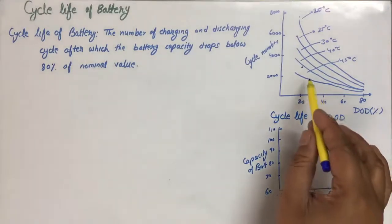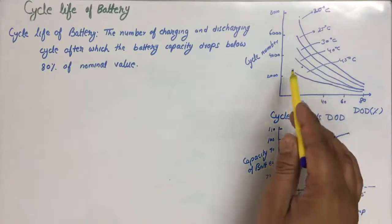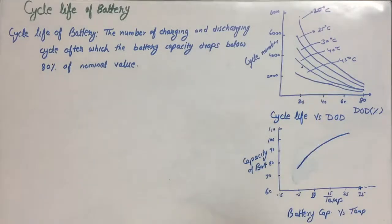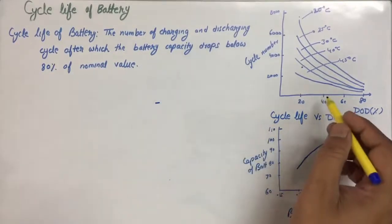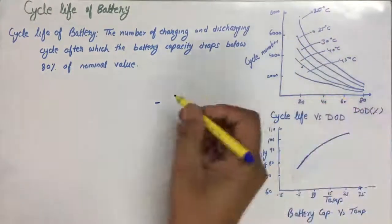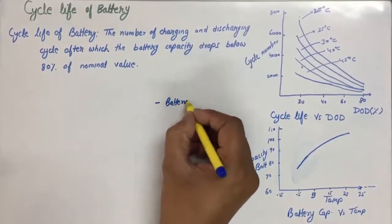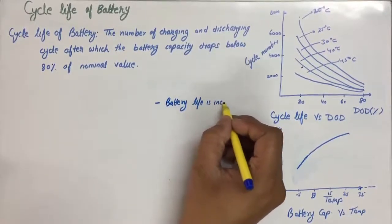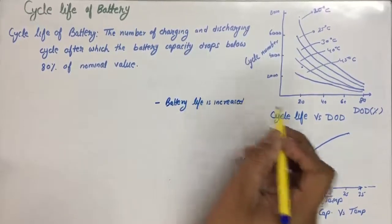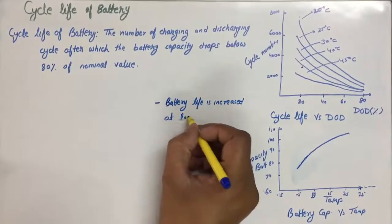But we cannot operate at higher temperature because we find from here the life of the battery, that is cycle number, decreases rapidly if the temperature is higher. So regarding these two, we can write few points. Battery life is increased at lower temperature.